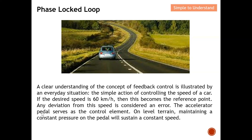Any deviation from this speed is considered an error. If it's exactly 60 km/h there is no error, but 59 or 61 km/h would both be considered an error. The accelerator pedal serves as the control element — it controls the speed of the car. You can step on it a little more to increase speed or lift your foot to reduce it, allowing you to maintain 60 km/h.